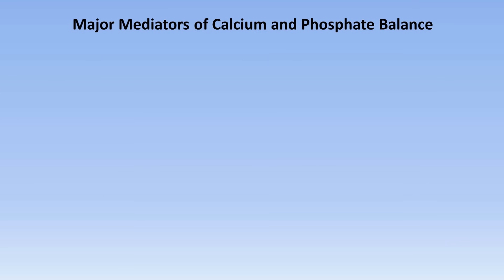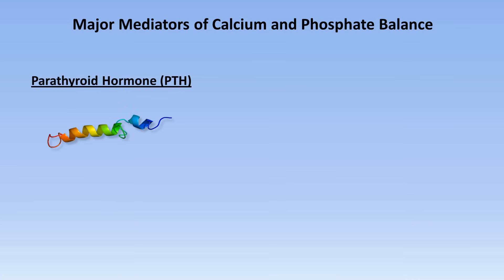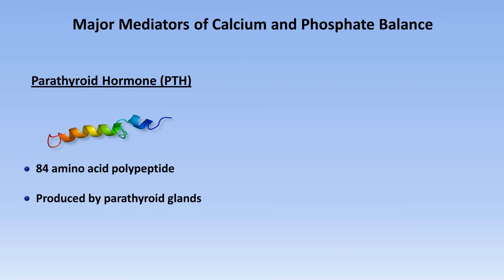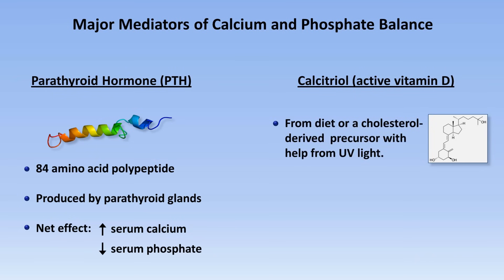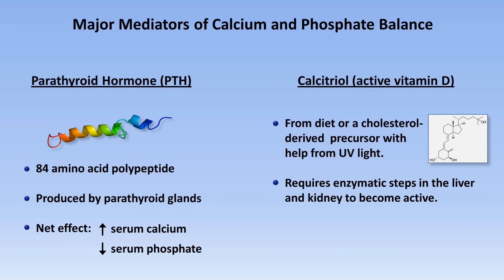The endocrine system mediates the processes of calcium phosphate balance using hormones. There are two major relevant hormones. The first is parathyroid hormone, usually abbreviated PTH. This is an 84-amino acid polypeptide produced by the parathyroid glands. Its net effect is to increase serum calcium and decrease serum phosphate. The other major hormone is calcitriol, also known as the active form of vitamin D. This is derived from diet or from a cholesterol-derived precursor with help from ultraviolet light. Formation of calcitriol also requires enzymatic steps in the liver and kidney. Its net effect is to increase both serum calcium and serum phosphate.